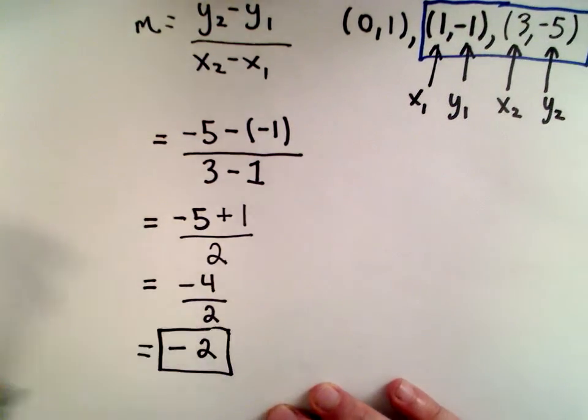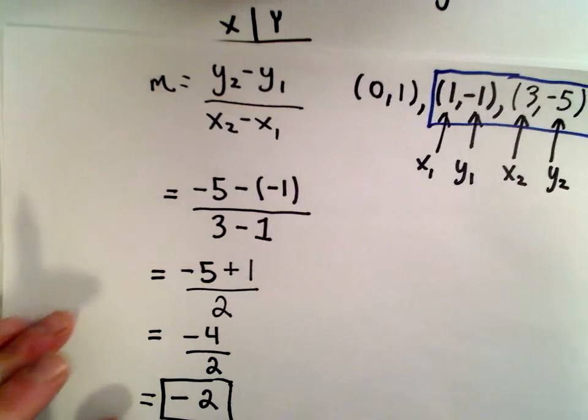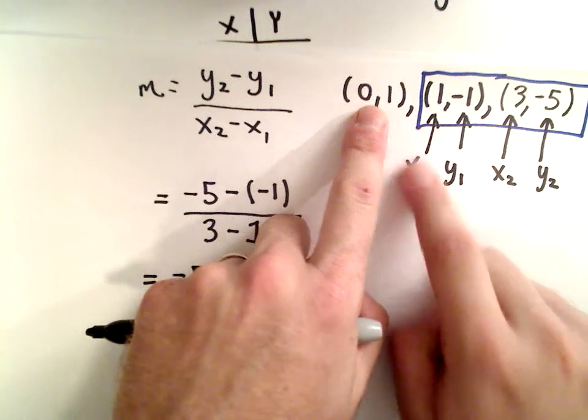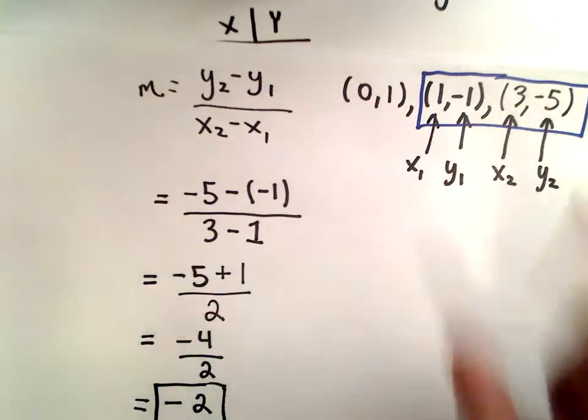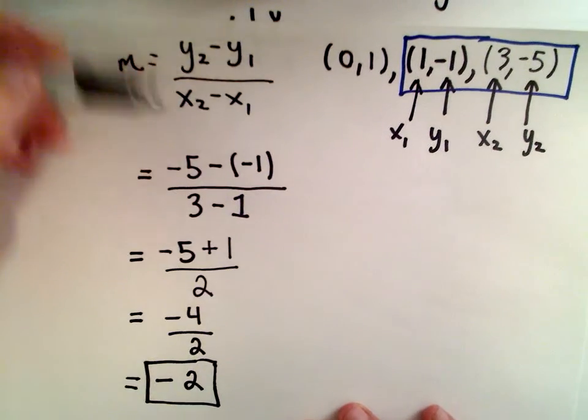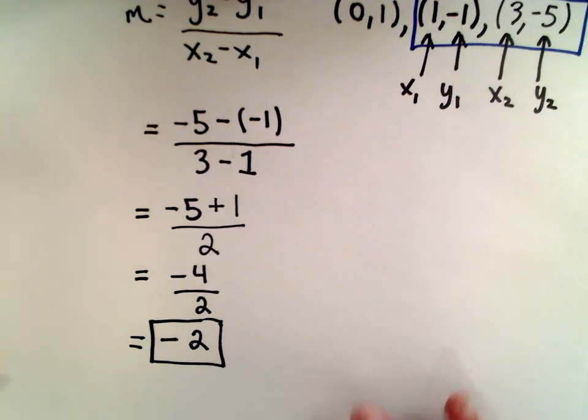And that's going to be the slope of our line, negative 2. And you can check, it doesn't matter. You could have used the first point and the second point or the first point and the third point and have went through the same calculation. And you would have found in all cases that the slope is equal to negative 2.